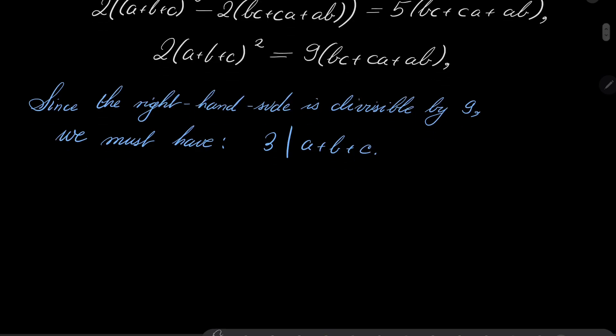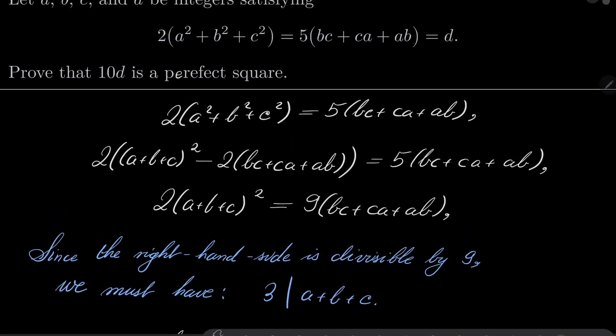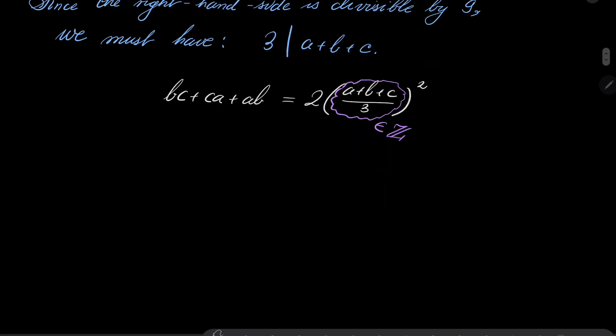This means we can write bc + ca + ab = 2(a + b + c)/3 squared. Notice that this is an integer. But what is bc + ca + ab? Let's go back. Notice that d equals 5 times that, so it's just d/5.